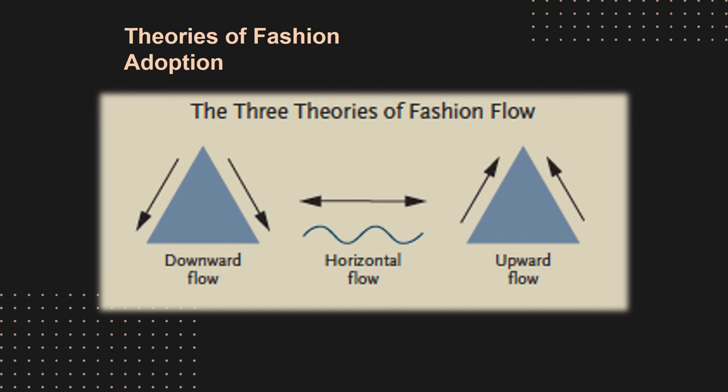Next is the horizontal flow theory, which is newer, and it's also known as the mass market theory. The horizontal flow theory states that fashion moves between groups at similar social levels at the same time — so the upper class adopts it and those on the lower end of the socioeconomic spectrum adopt it as well simultaneously.